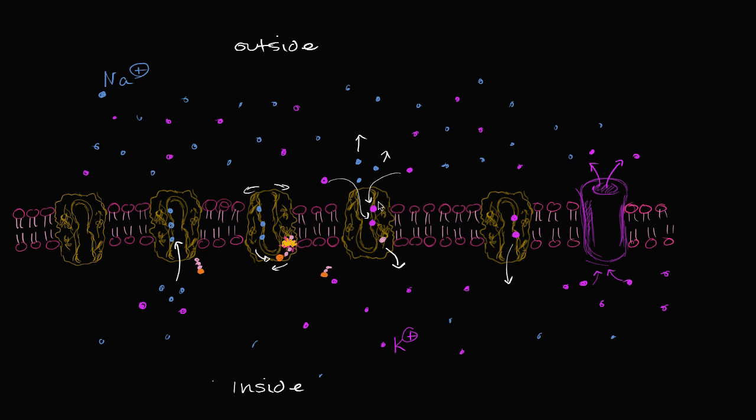But once that happens, this change of conformation, the sodium ions are going to be released outside of the cell. And then you're going to have potassium ions that are going to bind from the outside. And then once that happens, the change in conformation, it's going to get dephosphorylated. And then you're going to go back to your original conformation, where you no longer have an affinity for potassium ions. They're going to be released, and then you're going to be back in the original phase. So this is fascinating.